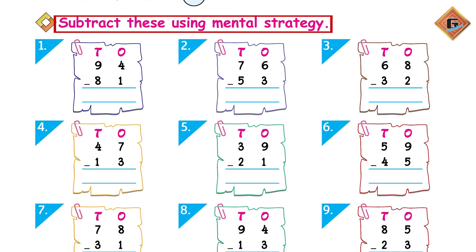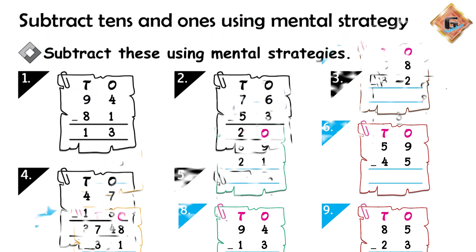using mental strategy. The first one is 94 minus 81. Ab hum pehle kya karenge? Ones ko ones mein se minus kar lete hain. 4 minus 1 equals 3, very good. Aur tens mein, 9 minus 8 equals 1, very good. So the answer is 13.